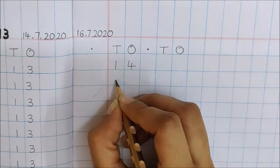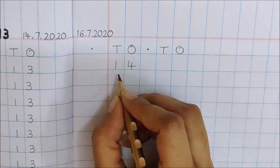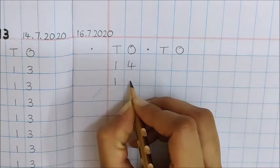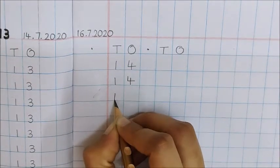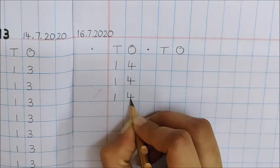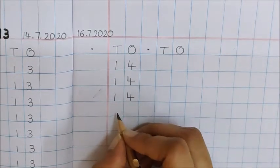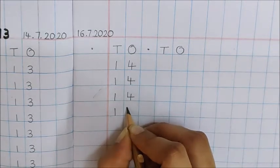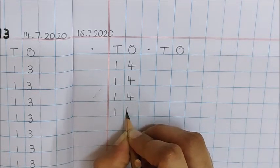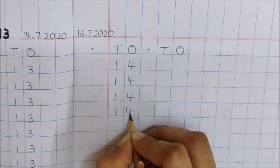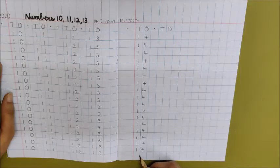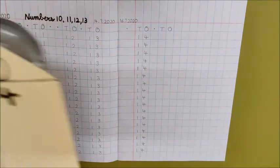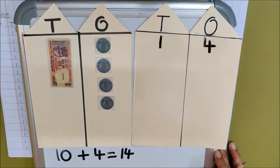Now you have to write 14 till the last box. See and write with me children: 1 ten and 4 extra is number 14. Look children, how am I making 4? Standing line, sleeping line, and now cut. See children, I have written till the last box. We have number 14 here — 1 ten and 4 extra is number 14.